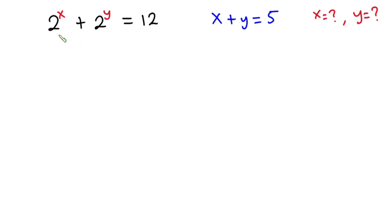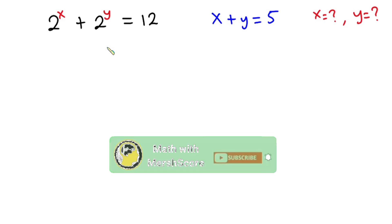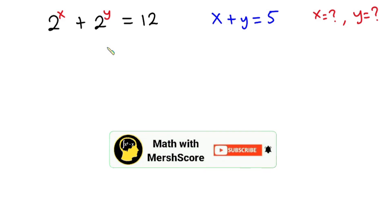Hello everyone. In this video we're going to be solving this system of equations. We have 2 to the power x plus 2 to the power y is equal to 12, and we also have x plus y is equal to 5. We have to find the value of x and y. Before we begin, pause the video and try first, and if you are new here consider subscribing.